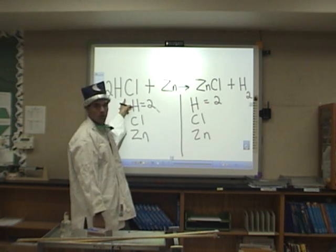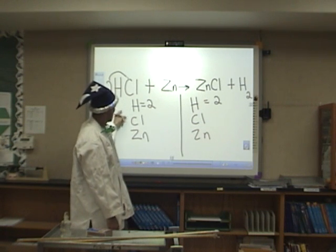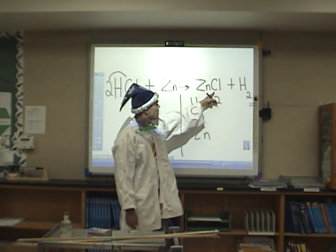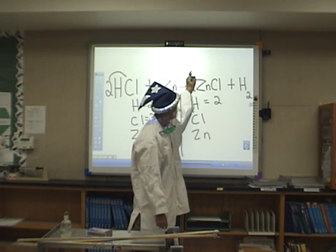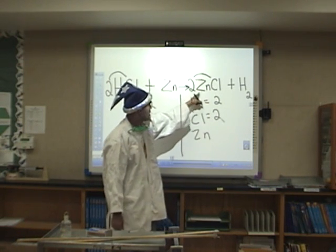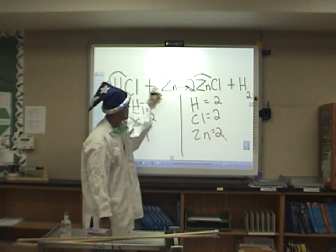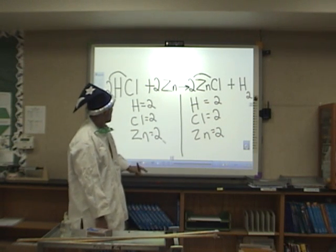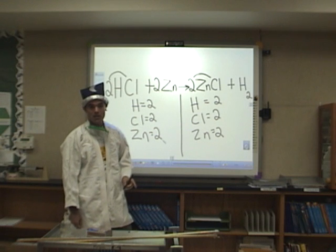But now because we've done that, we use distributive properties, and that means that now we have two chlorines. So we'll put two chlorines here. On this side, we have one chlorine, so we'll need to add another coefficient of two. Now using distributive properties, we have two chlorines, and we've created two zinc. So now we have two zinc here, and right here we're allowed a coefficient of two. And now we have a grand total of two hydrogen, two chlorine, and two zinc on both sides of that equation.